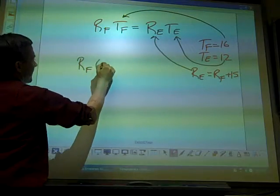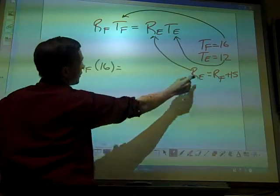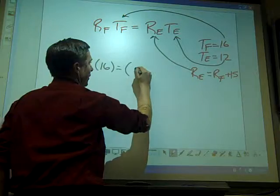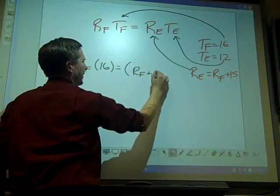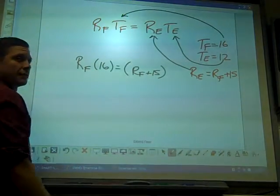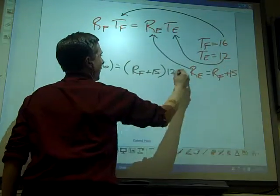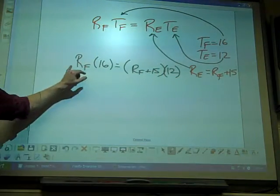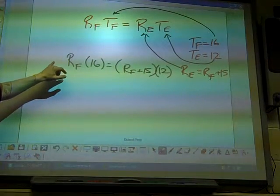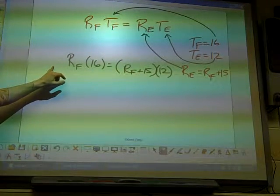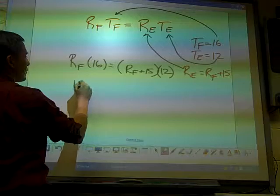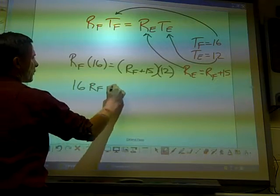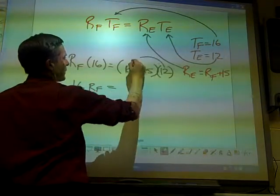And if I do that, R_F times 16 equals, what's R_E equal? It equals R_F plus 15. What's T_E equal? 12. And again take a look now, how many variables in this new equation? Just one. Go ahead and make the multiplication. We always put the number first, right? Multiply the 12 in.